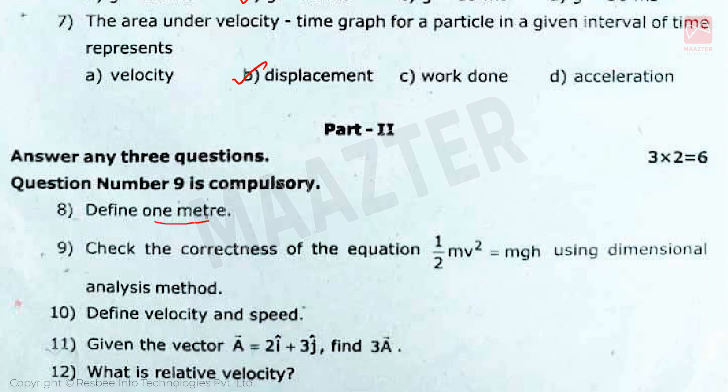First question is: Define one meter. Length of path traveled by light in vacuum is 1 meter. Next question: Check the correctness of the equation 1/2 mv² = mgh using dimensional analysis method. This is compulsory question. First, find the dimensional formula for 1/2 mv². Then find the dimensional formula for mgh. Both dimensional formulas are ML²T⁻². So, 1/2 mv² = mgh is dimensionally correct.